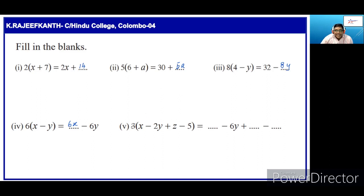Here, 3 into x minus 2y plus z. Then, 3 into x is 3x, minus 3 into 2y is 6y, 3 into z is 3z. We will see in the next video how to multiply an expression by a negative number. Thank you for watching.